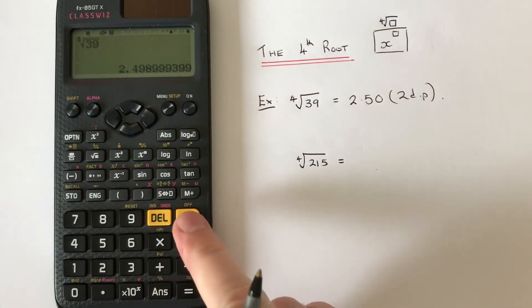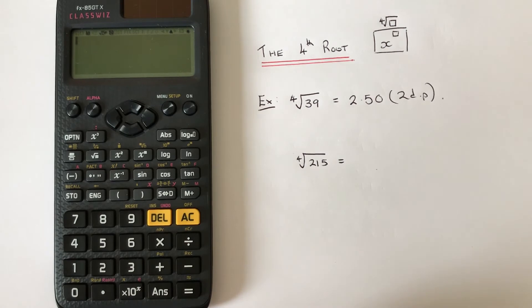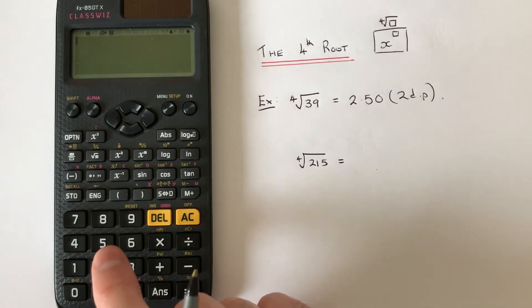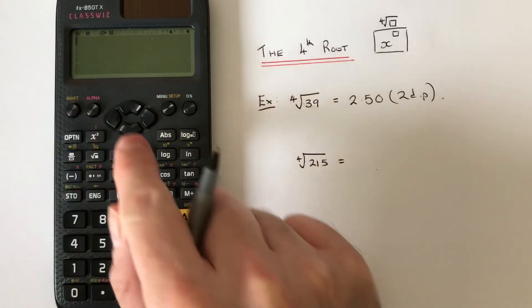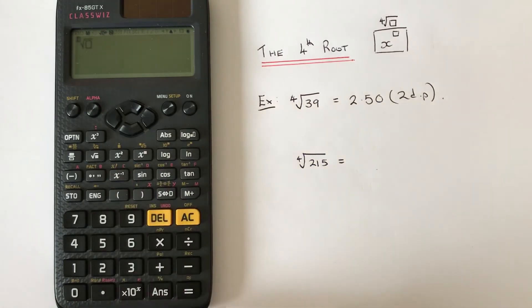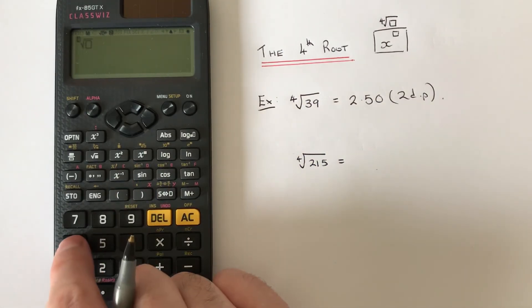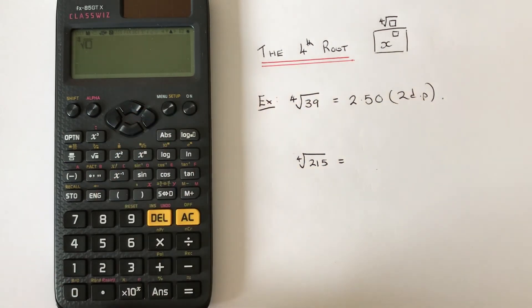Let's have a look at the second example. So we've got the fourth root of 215. So shift, x to the power, so if we type 4 on the root, press the right key, then type in 215, press equals.